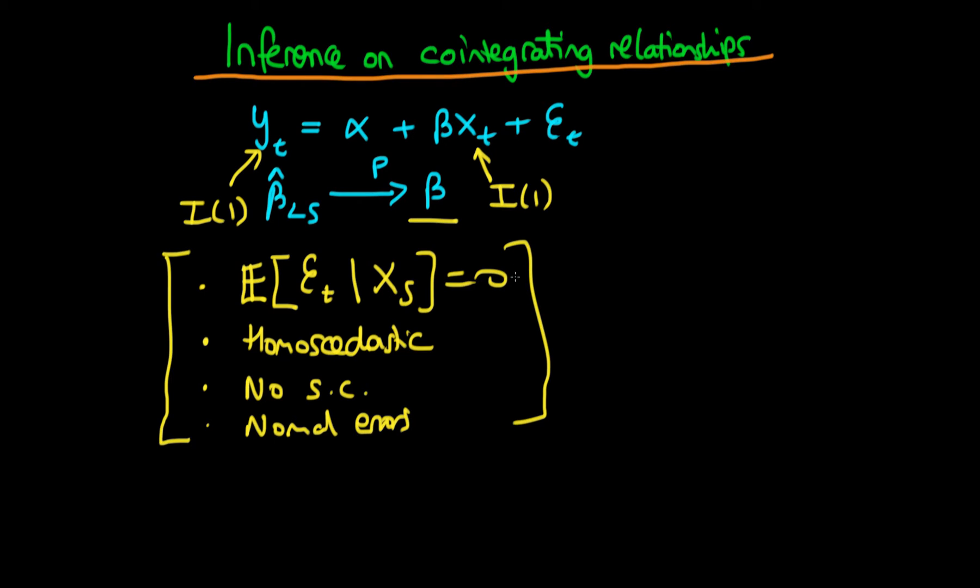And it will actually be the case that beta hat in finite samples is normally distributed around the true parameter beta. So we don't actually need to appeal to asymptotic theory, but it looks a bit like I've replaced one problem which seemed like a relatively serious problem with another problem which is far more serious, because we know it's often the case that the strict exogeneity assumption isn't true, so the expectation of et given xs certainly isn't zero.